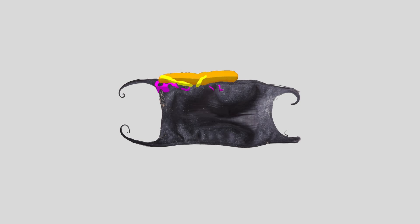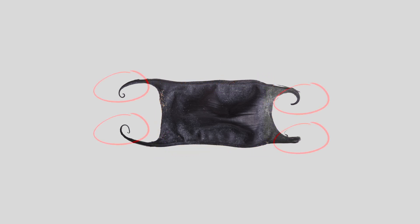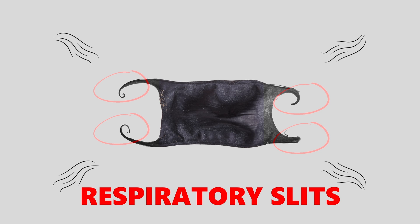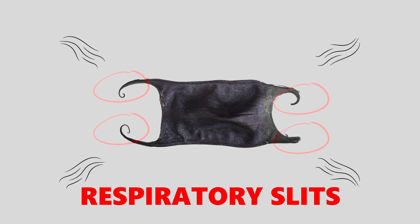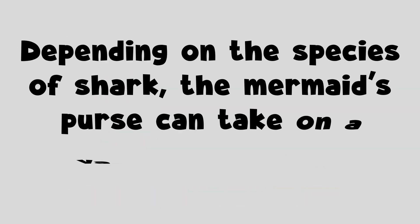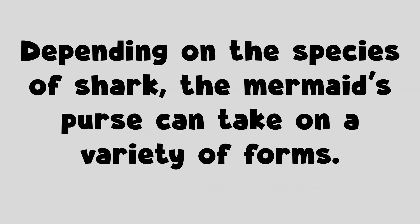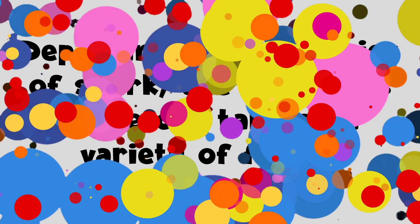A mermaid's purse is sealed from all sides, but has four openings, known as respiratory slits, that allow the young shark to breathe. Depending on the species of shark, the mermaid's purse can take on a variety of forms.